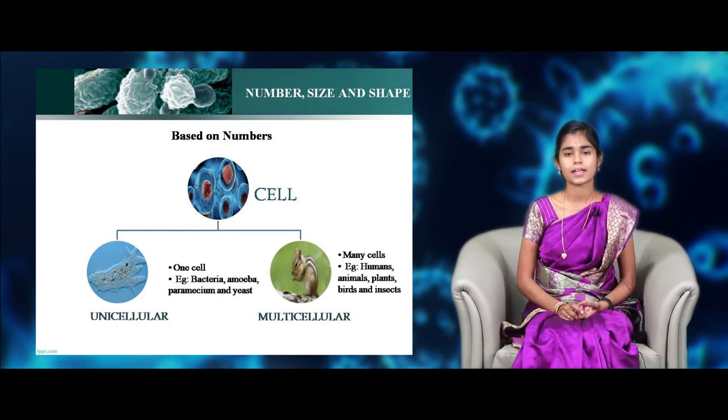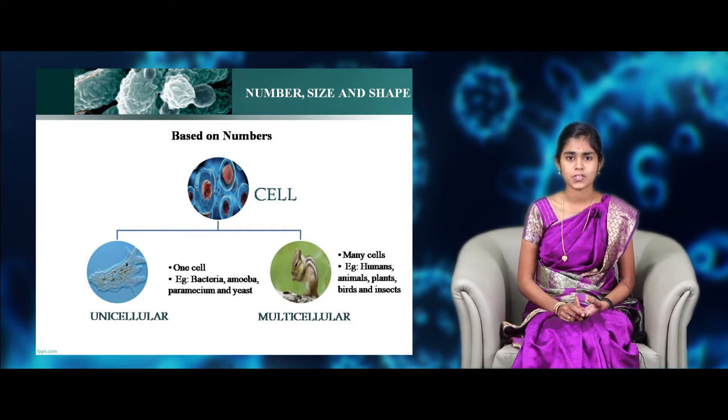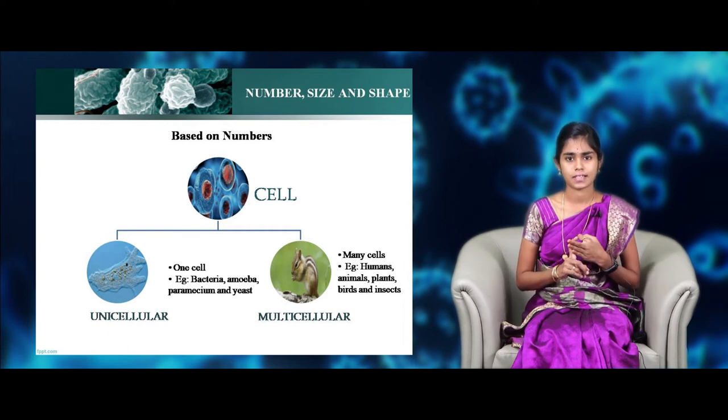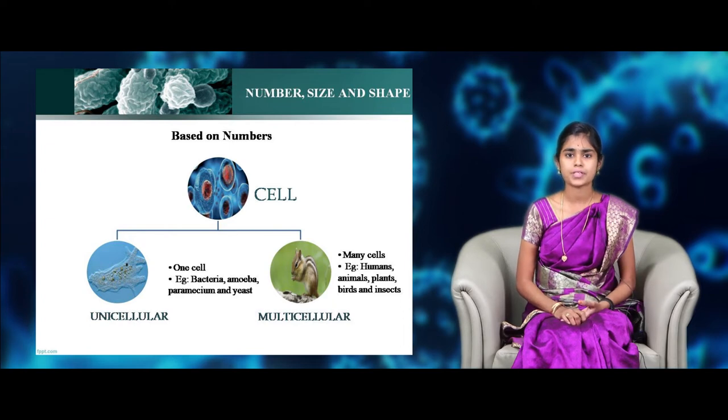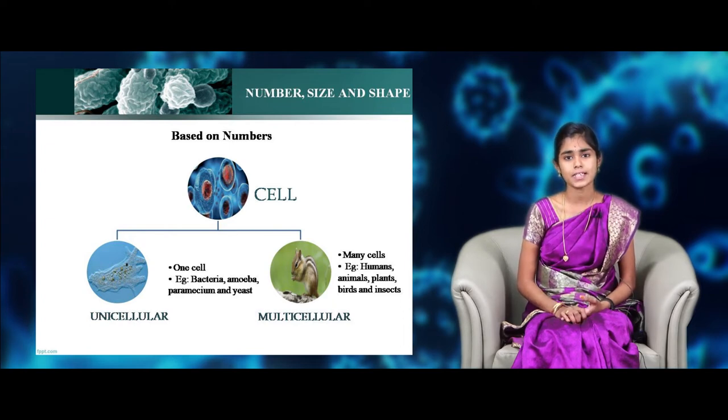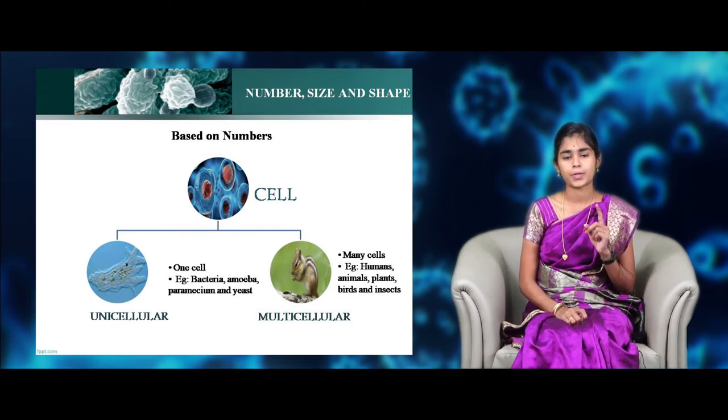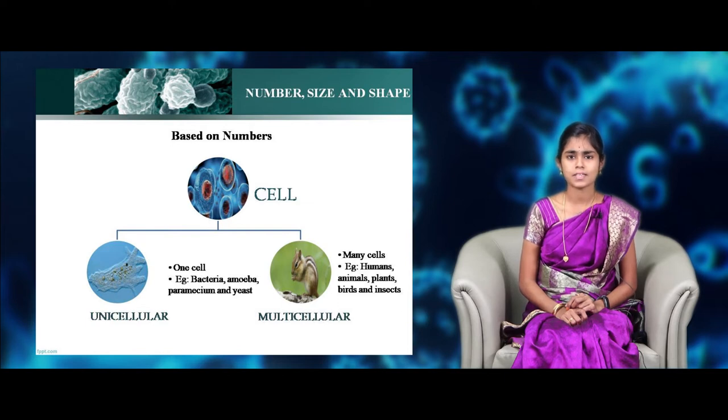Now, we are going to see about the classification of cells. Cells are different types based on its number, shape and size. First, we are going to see about the classification of cells based on its number. There are different types of cells based on its number. Basically, two types. One is unicellular and another one is multicellular. As the term suggests, uni means one and multi means many.